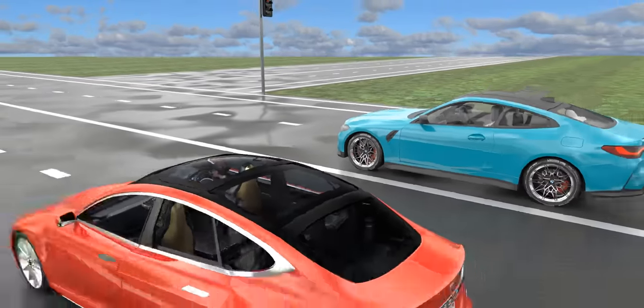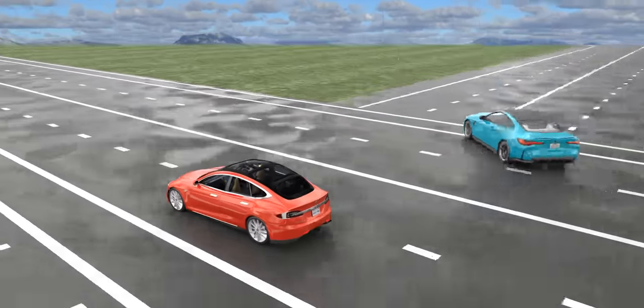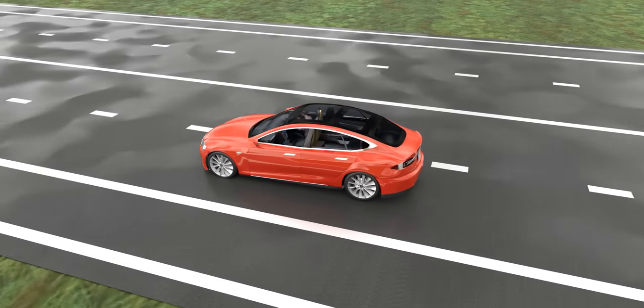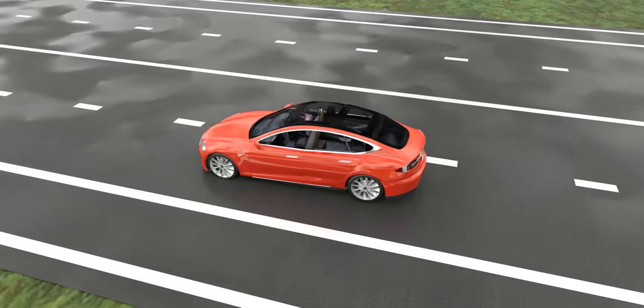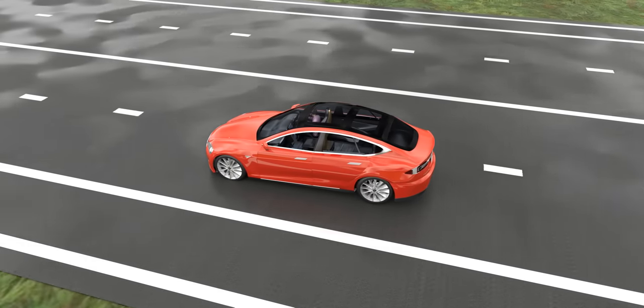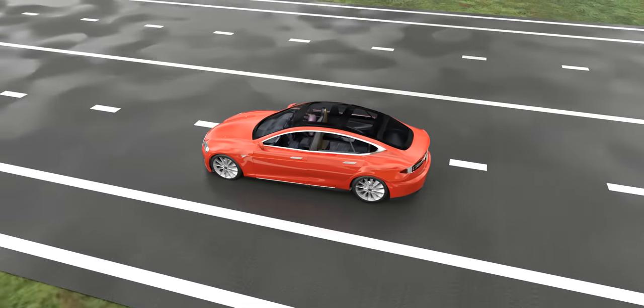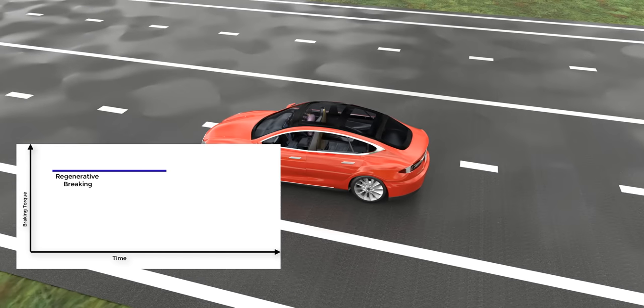However, at low vehicle speed, the regenerative braking is not effective. To completely stop the vehicle, you have to engage the normal friction brake. This means at the beginning of the braking action, 100% braking torque would be supplied by regenerative braking. But at the end, normal friction braking will be in charge.